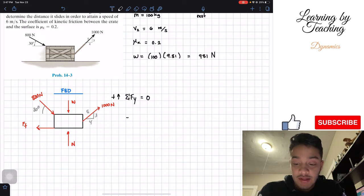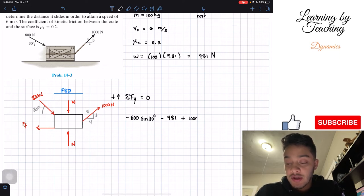Therefore, we will have negative 800 times sine of 30 degrees. We'll have negative weight, which is 981, because it's going down. We will have positive 1,000, but the y component is 3 out of 5. And lastly, we have my normal force, and all this should be equal to 0.